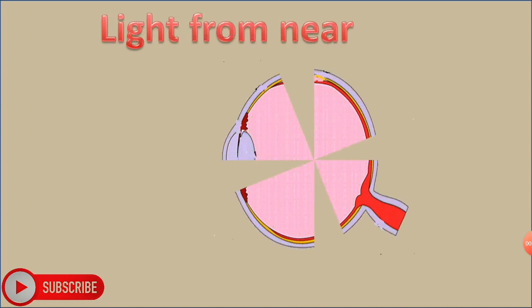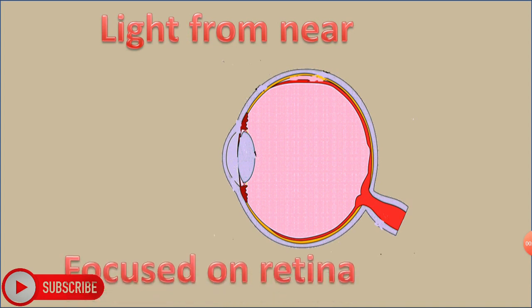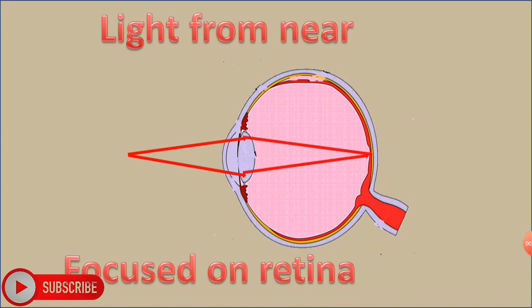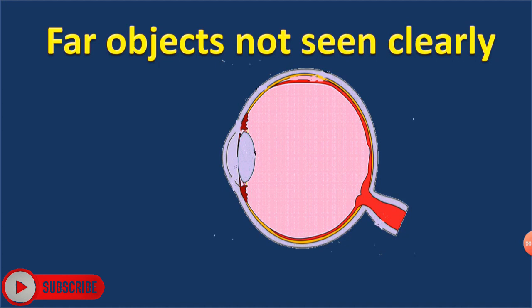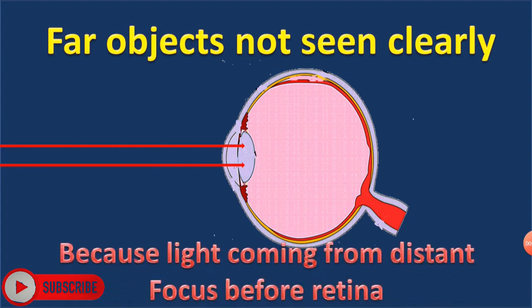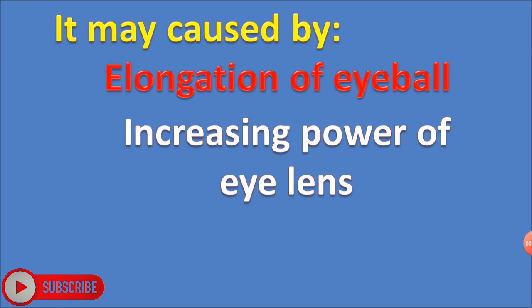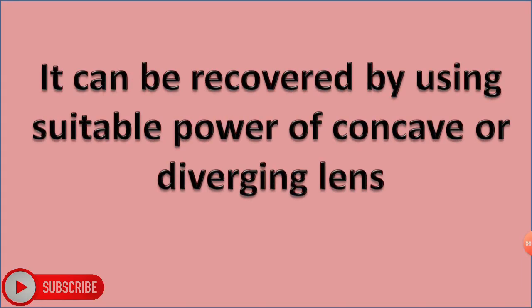In myopia, light from near objects enters through the eye lens and is focused on the retina. However, far objects are not seen clearly, because light coming from a far object is focused before the retina. Myopia may be caused by elongation of the eyeball, increasing power of the eye lens, or thickening of the lens.